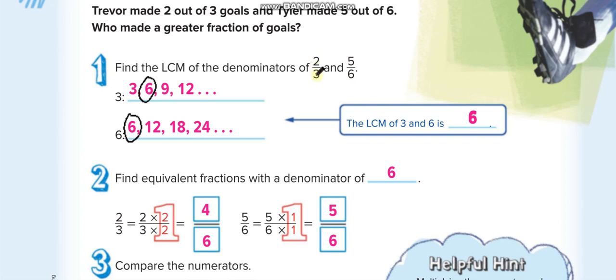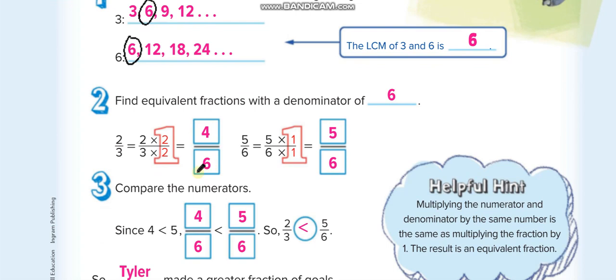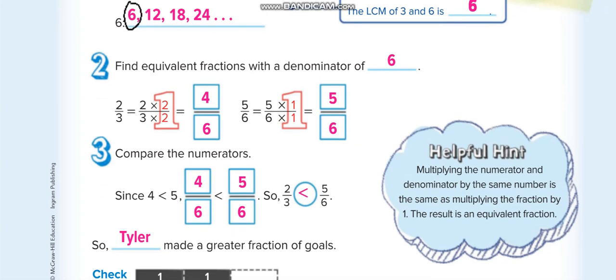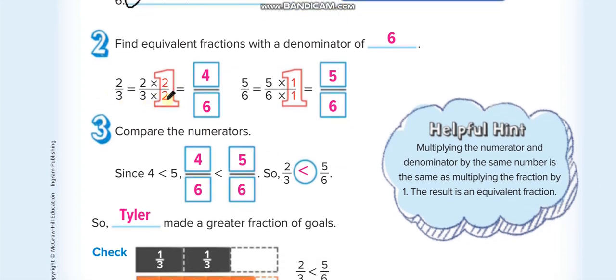We only have to change the first one. What do we multiply with 3 to get 6? We multiply by 2. We follow the rule of equivalent fractions — whatever we multiply down, we multiply the same number up. So we multiply by 2 on top and bottom. Our first fraction becomes 4 over 6, and the second is already 5 over 6. So 5 over 6 is greater than 4 over 6.